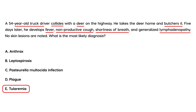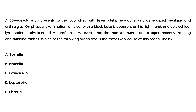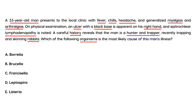Clinical vignette three: A 33-year-old man presents with fever, chills, headache, generalized myalgias, and arthralgias. Physical exam reveals an ulcer with a black base on his right hand and epitrochlear lymphadenopathy. Careful history reveals he is a hunter and trapper who has recently been trapping and skinning rabbits. The symptoms are general, but the careful history reveals the most important point — rabbit contact. The organism most likely causing his illness is Francisella tularensis.